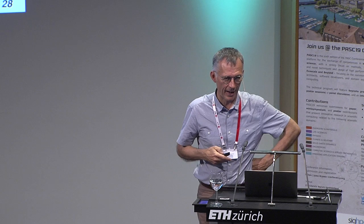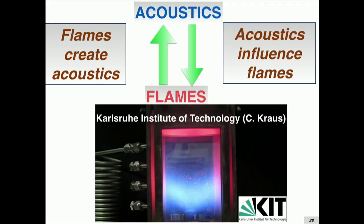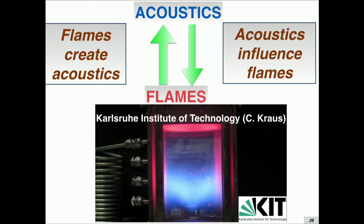When the flame hears noise it moves, and also when noise is created by flames, this creates the possibility that noise modifies the flame and this loop can get crazy. The flame starts moving, makes noise, the noise modifies the flame, the flame moves more — and then things start getting into a very bad situation. That's an example of a burner at DLR in Germany. Normally this thing should be quieter, but what you hear is a strong instability. If you had that in a real engine, the engine would explode.